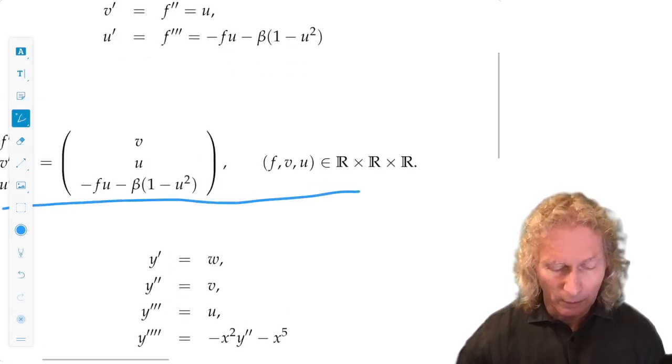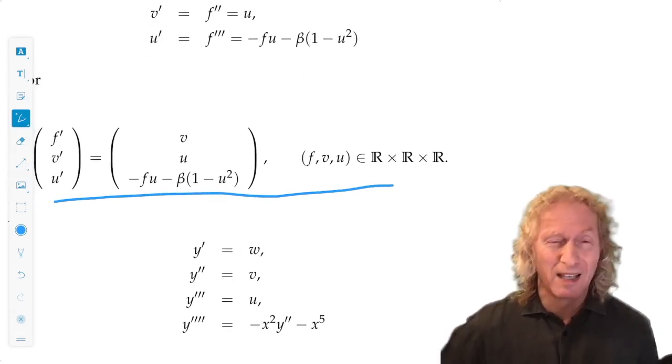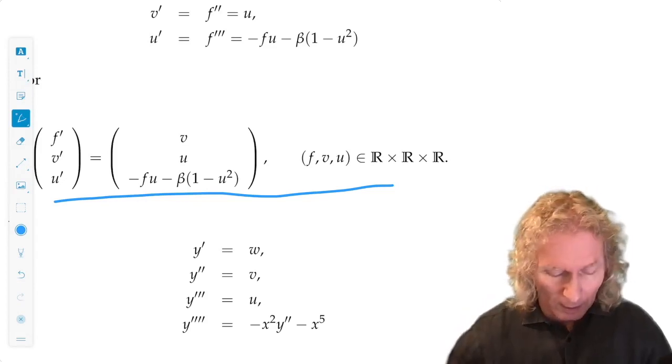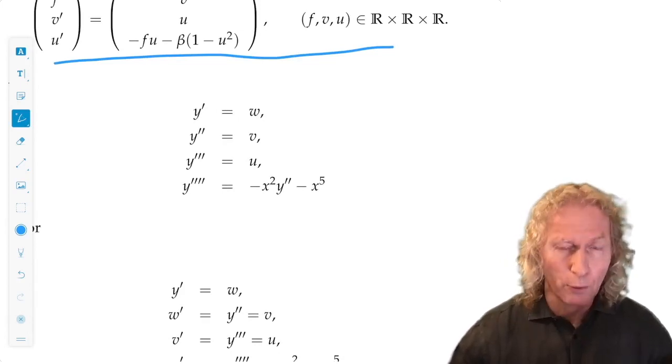In this particular case, the three dependent variables are f, v, and u, and they live in three space. I'll leave it to you to look at the same procedure for the fourth order equation.